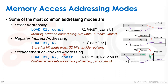A third mode is displacement or indexed addressing. We provide two registers as operands plus a constant from the compiler. R1 is the destination register, R2 holds a base address such as a full 32-bit address, and the constant is a displacement — so we go to the base address stored in R2 and add the constant offset to get the actual memory location. This is very commonly used because arrays have a pointer to the beginning and we index with an offset, and the same applies to the stack.